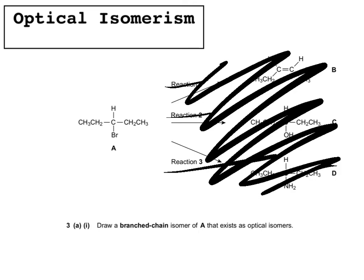To answer this, start with a central carbon and draw four bonds around it. You know it needs four different groups. You have an H, a Br, and four carbons to work with. Put H on one bond, Br on another, a CH₃ at the bottom — that uses one carbon — and then for the remaining three carbons, attach a C with two further carbons and an H, giving a branched group. The longest chain is now four carbons with a branch, and the central carbon has four different groups: H, Br, a methyl group, and a larger branched group.